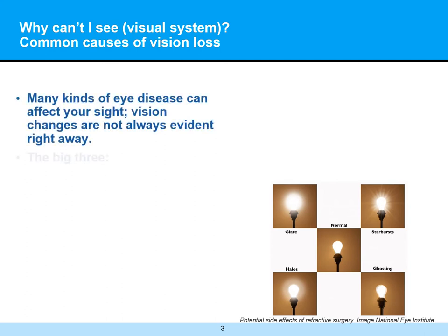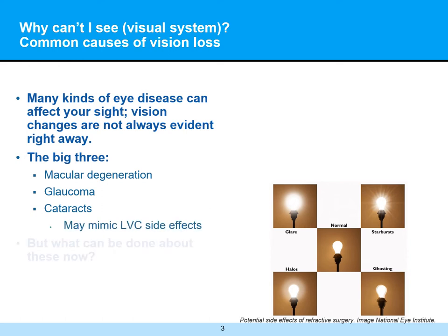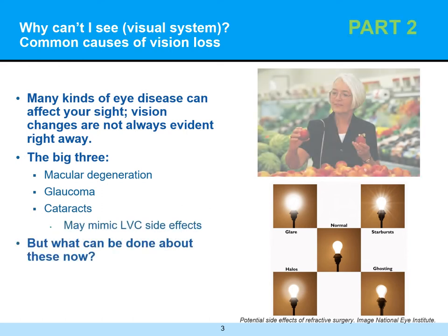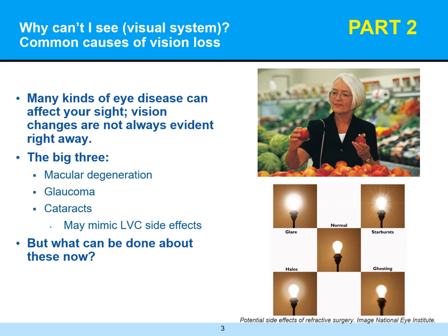Many different kinds of eye diseases can affect your sight. The vision changes are not always evident right away. The big three — macular degeneration, glaucoma, and cataracts — can have various symptoms to look for. Cataracts specifically can mimic some of the side effects that we normally see with LVC, or laser vision correction. So the question is: what can you do to try to prevent these diseases from becoming problematic?